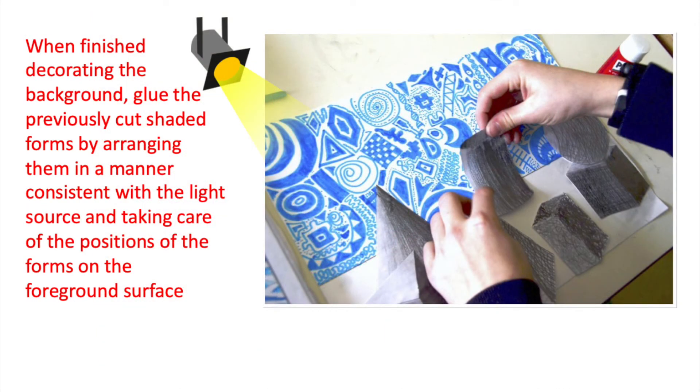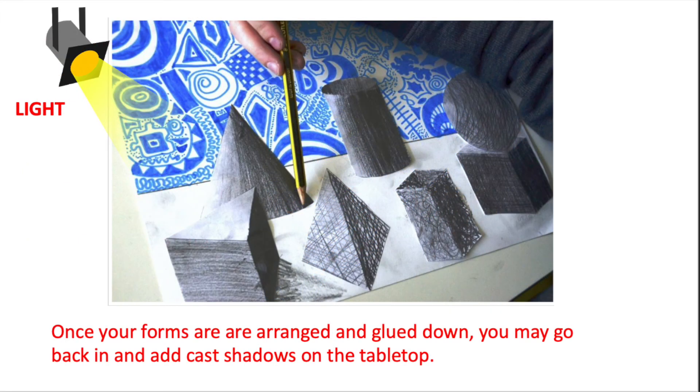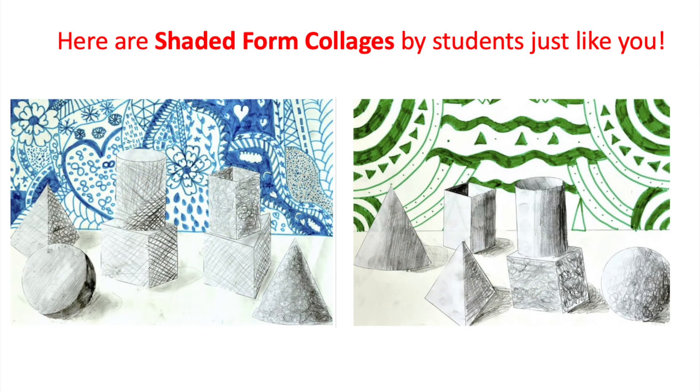When you're finished decorating the background, glue the previously cut shaded forms by arranging them in a manner consistent with the light source and taking care of the positions of the forms on the foreground surface. Once your forms are arranged and glued down, you may go back and add cast shadows on the tabletop. Here are shaded form collages by students just like you.